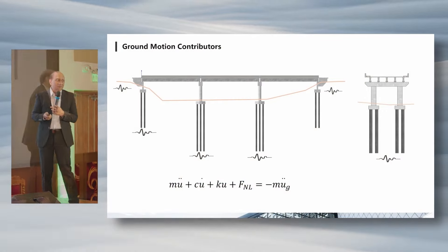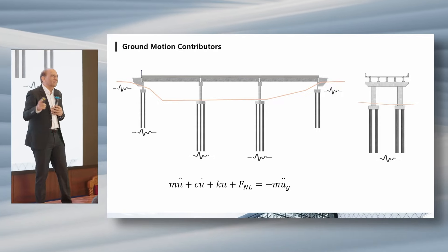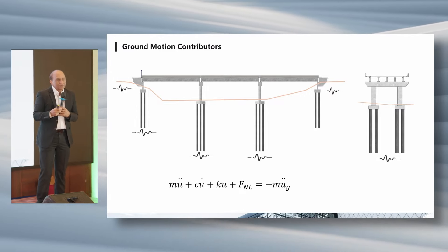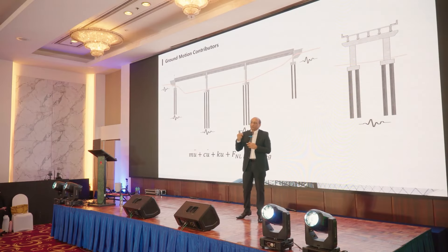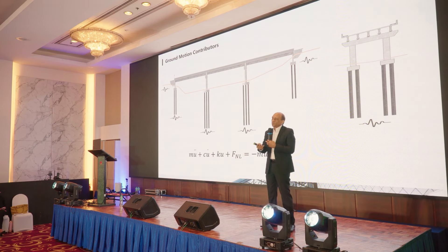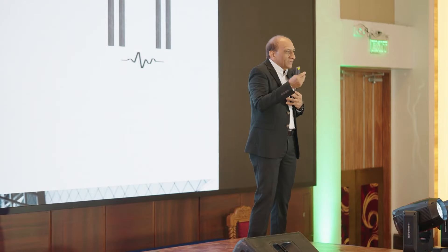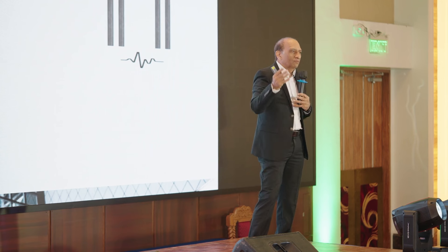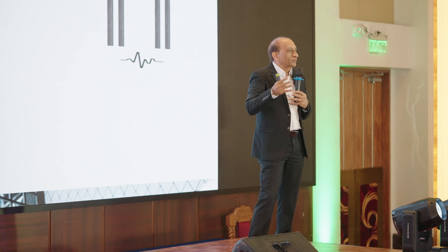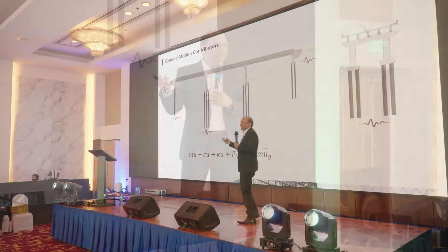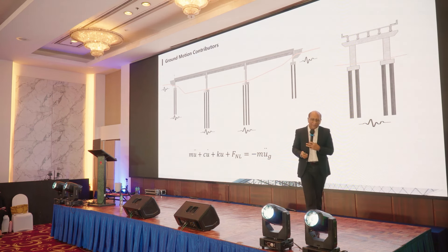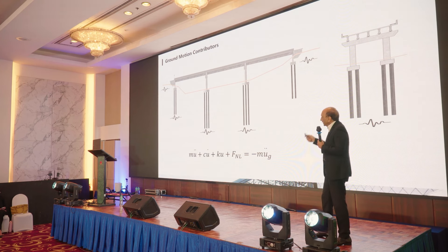Ground motion is the second hard part. You can't rely on code maps because they don't have site-specific information. You need to do a PSHA — probabilistic seismic hazard analysis — to get the actual ground motion at the site based on soil, the attenuation model, bedrock location, and everything else. Then you need multiple time histories: 3, 11, or 14, depending on the code, because you need to average and make sure you don't miss anything. Nonlinearity is the first difficult challenge, and providing proper ground motion input is the second.